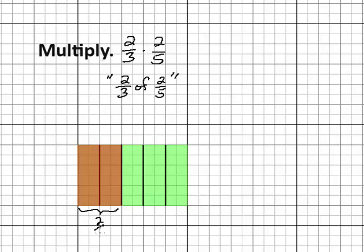Now our goal is to take two-thirds of this two-fifths. So what we need to do is break this two-fifths into three spots and choose two of those three.